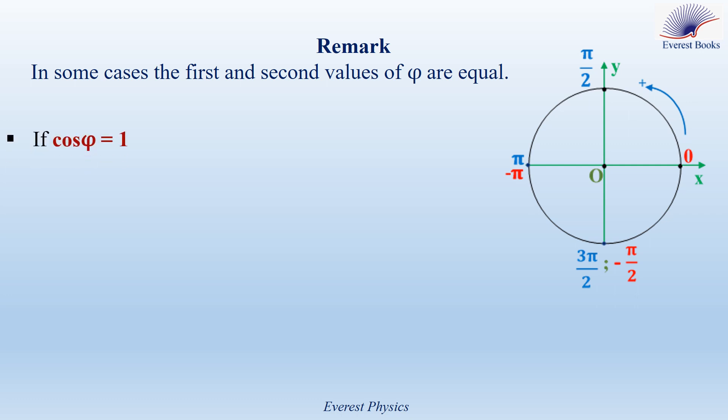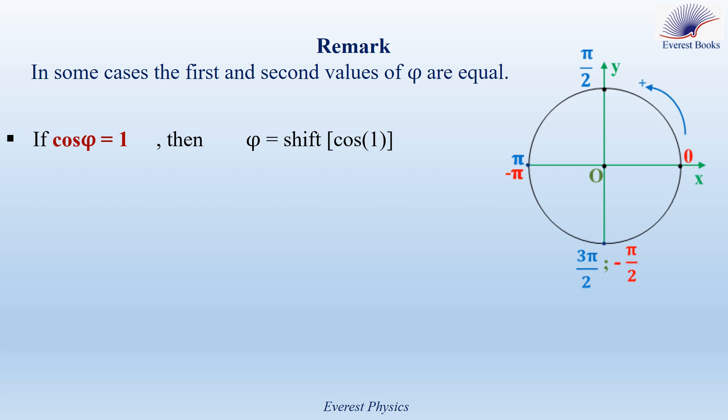If cosine phi equals 1, using the calculator gives shift cosine 1 equal to 0. According to the previous rule, the second value is minus 0, but in standard mathematics, negative 0 is equivalent to positive 0 because 0 is unsigned. So actually we have one value.